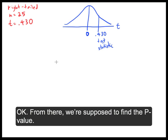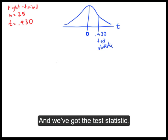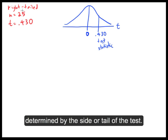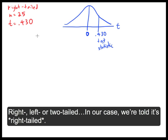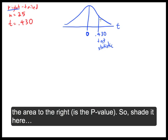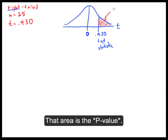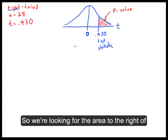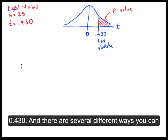From there we're supposed to find the p-value. When you've got the test statistic, the p-value is going to be an area determined by the side or tail of the test. Is it right-tailed, left-tailed, or two-tailed? In our case, it's right-tailed, and that means you're looking for the area to the right. So I'm going to shade it here. That area is the p-value—we're looking for the area to the right of 0.430.